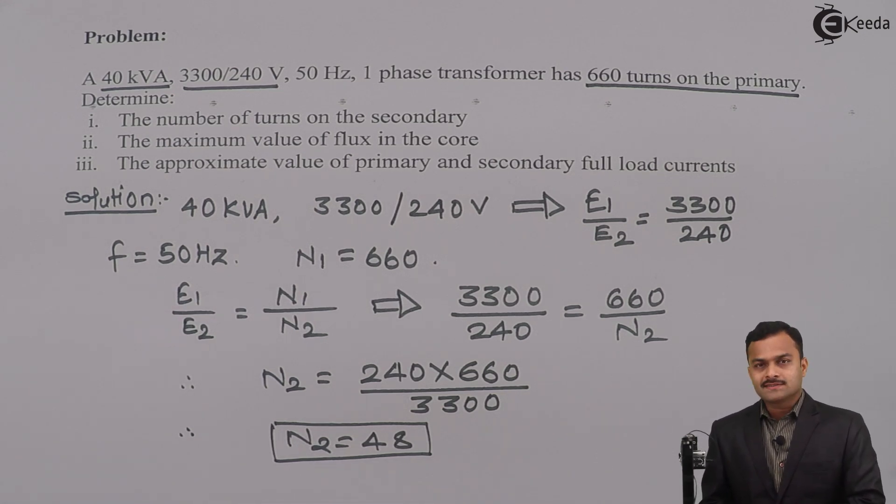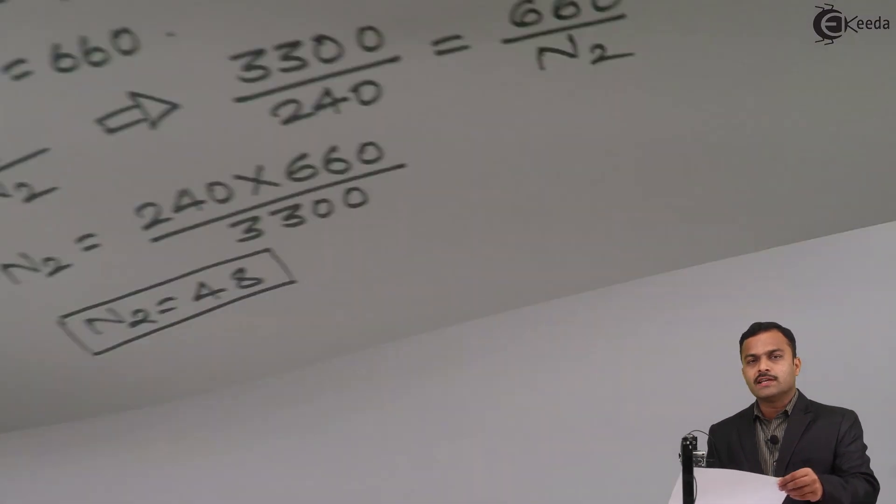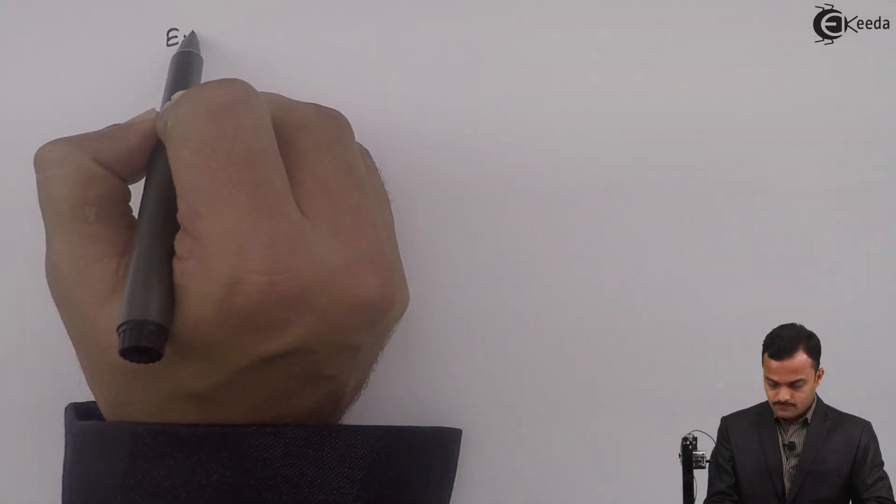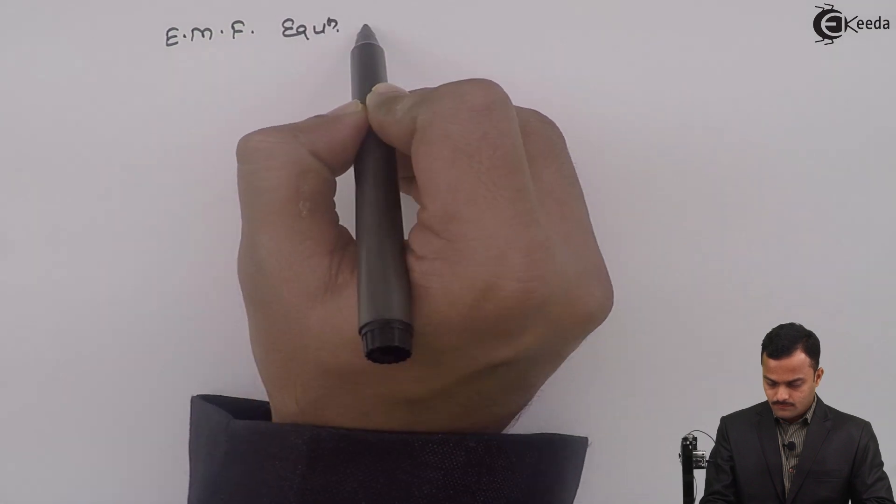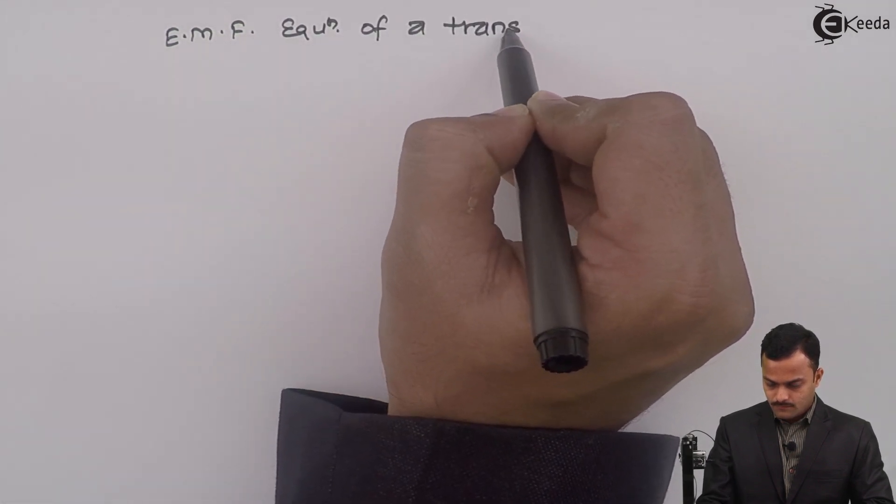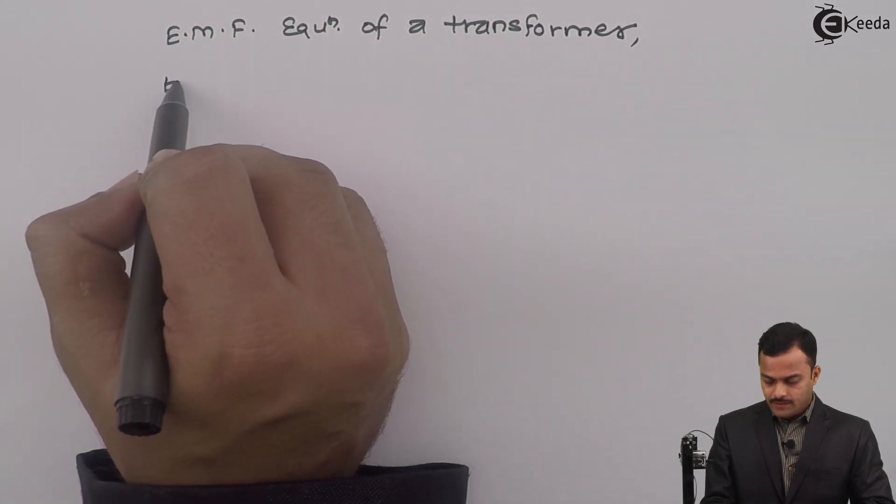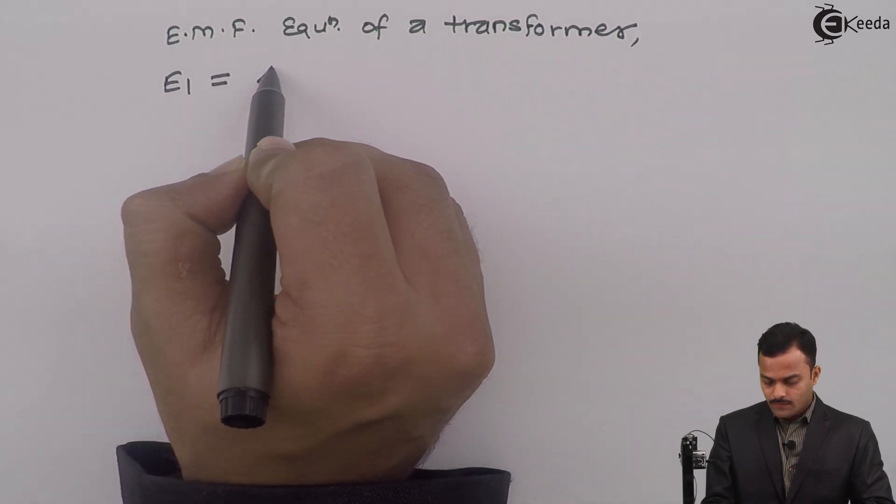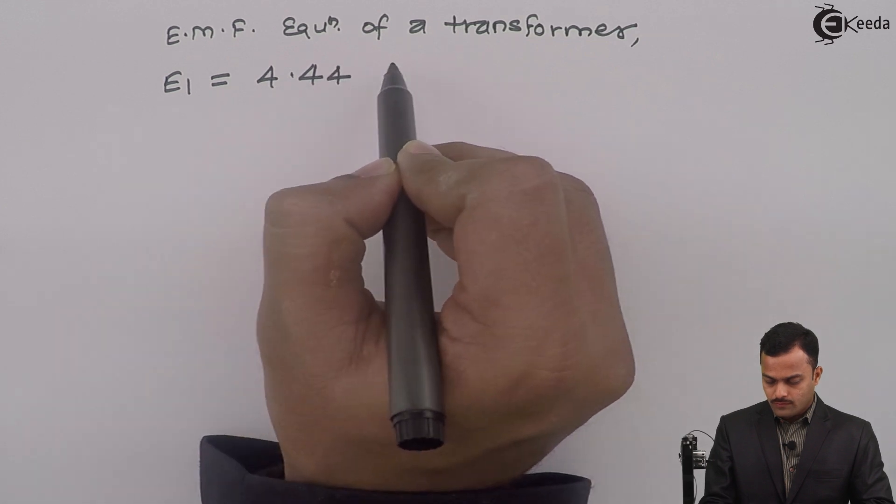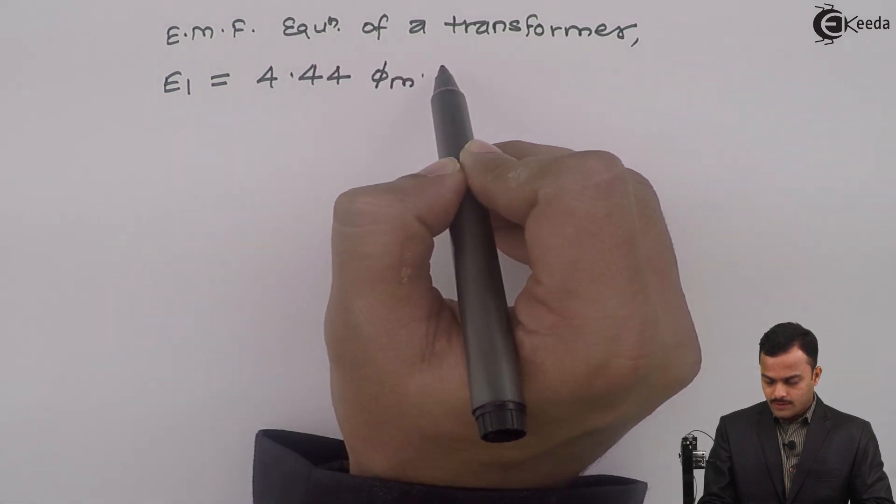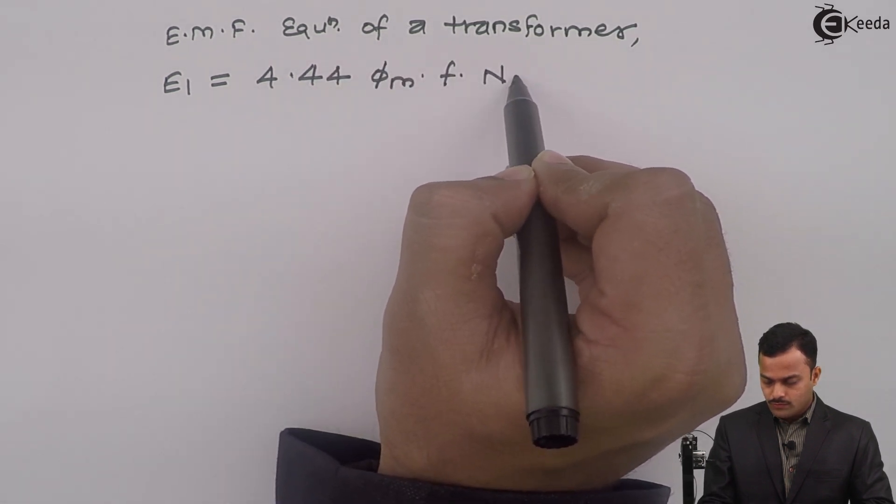Let's find out a second entity that is the maximum value of flux in the core. So for that purpose, I will use EMF equation of a transformer.